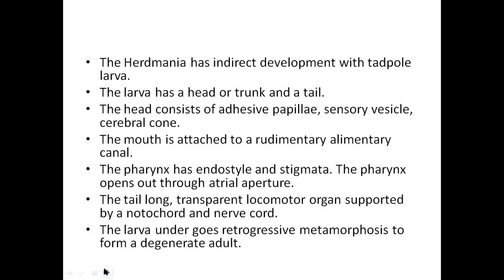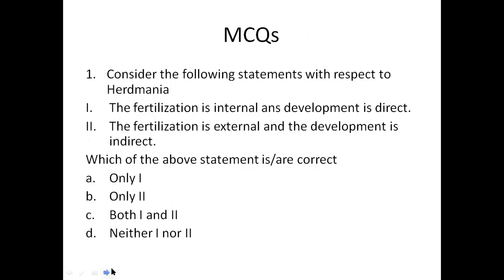These are the details regarding the structure of the tadpole larva, from fertilization through to attachment of the larva to the substratum, after which retrogressive metamorphosis will be discussed in the next session. Brief recap: Herdmania has indirect development via the tadpole larva. Head region has adhesive papillae, sensory vesicle, and cerebral cone. Alimentary canal is rudimentary; endostyle is attached to pharynx with six stigmata. The tail extends conically with a fringing tail fin as a strong locomotory organ.